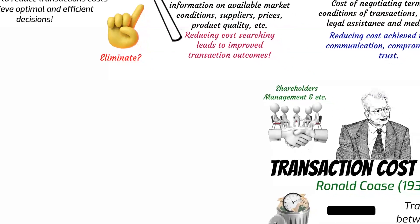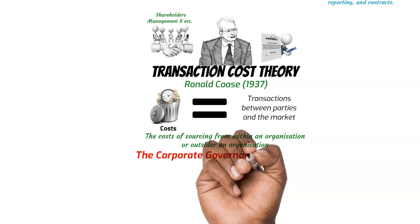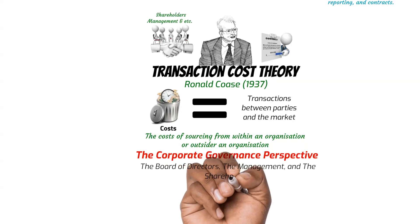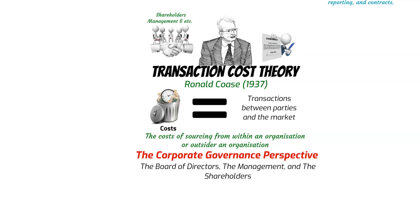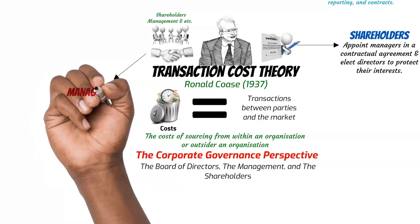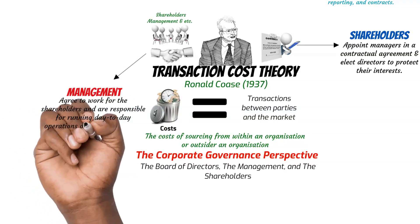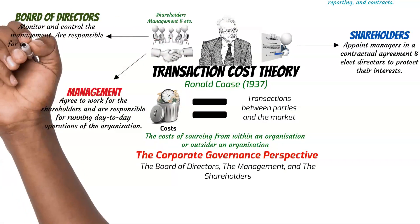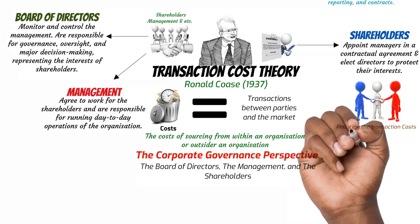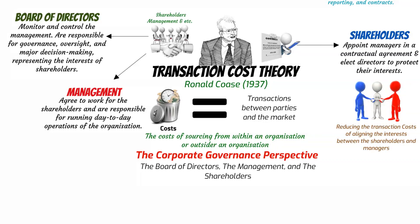Now let's see how transaction cost economics sheds light on corporate governance structures. As discussed in our other corporate governance videos, there are three primary players in corporate governance: the board of directors, shareholders, and management. Shareholders are the owners of the company, responsible for electing the board of directors and safeguarding their interests. Management oversees day-to-day operations, making decisions to achieve company objectives. The board of directors represents shareholders, sets policies, and provides oversight to ensure the company's success and adherence to ethical standards. Transaction cost theory explains how managers, shareholders, and the board design governance structures to minimize costs associated with aligning interests and preventing conflicts. Mechanisms such as performance-based compensation and independent directors reduce transaction costs and enhance corporate performance.